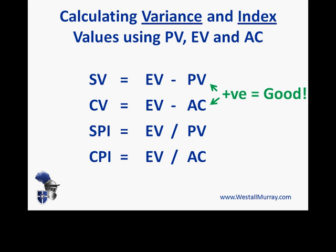A quick word on interpreting results: for both variance items, a positive result means good — either you're ahead of schedule or under budget. For the index values, you want greater than one — that's a good result. Less than one is not a good result.